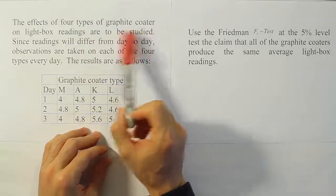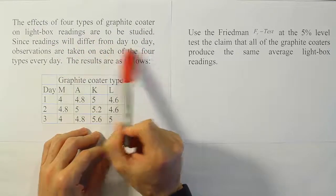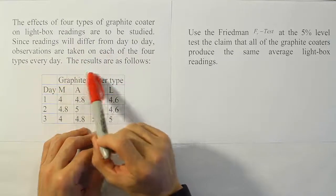The effects of four types of graphite coater on lightbox readings are to be studied. Since readings will differ from day to day, observations are taken on each of the four types every day. The results are as follows.